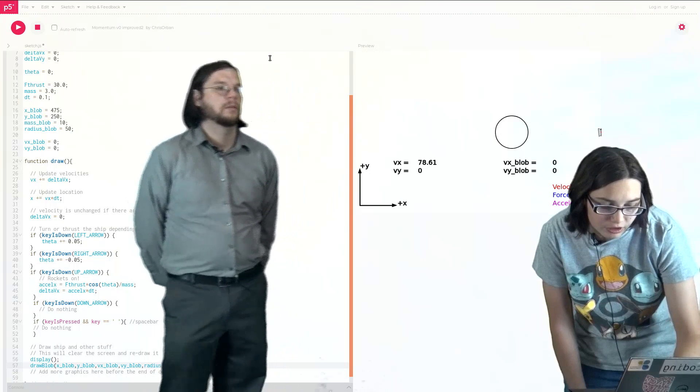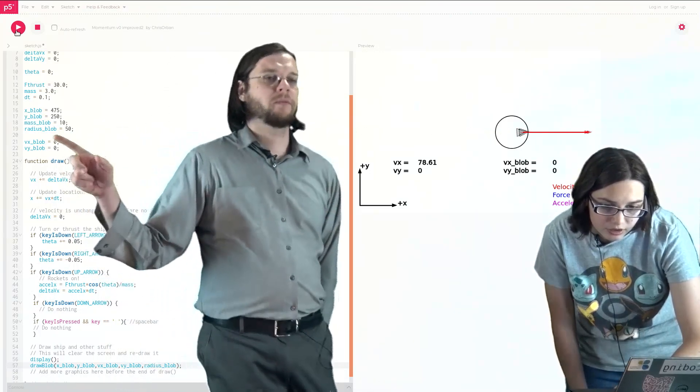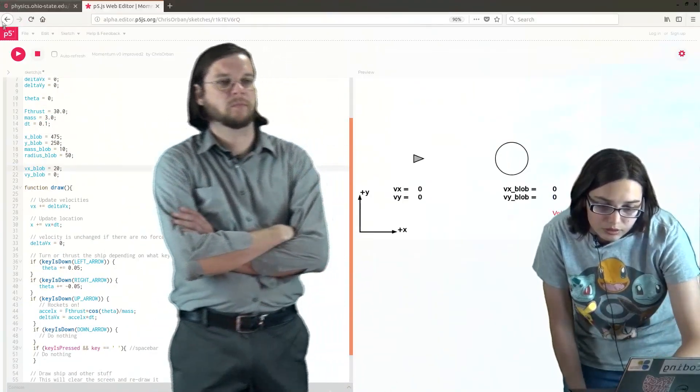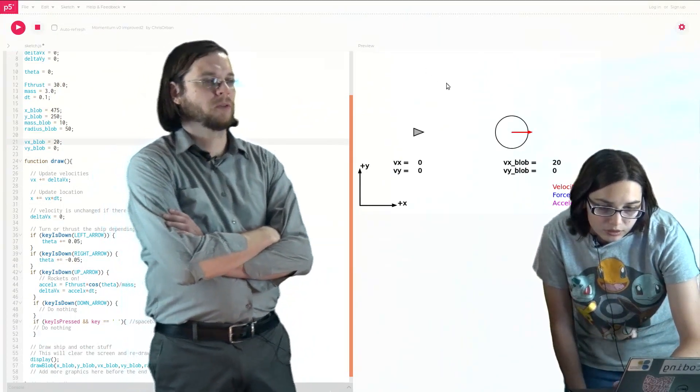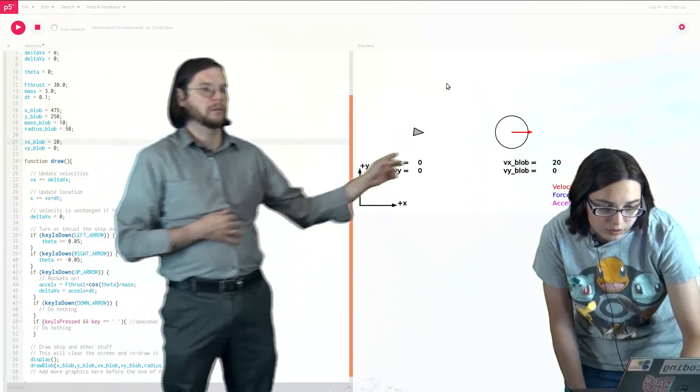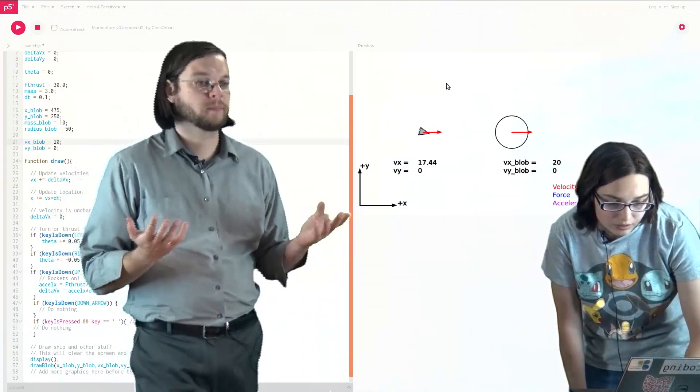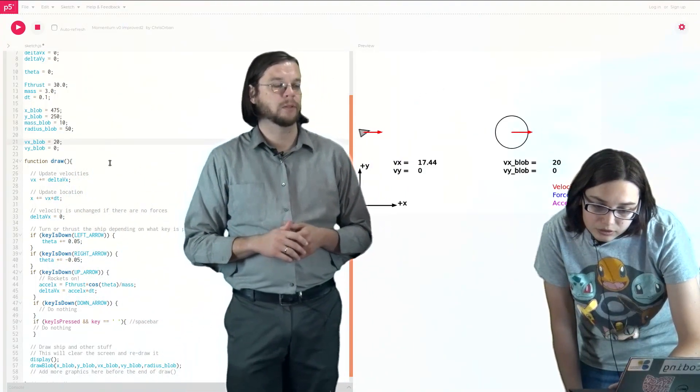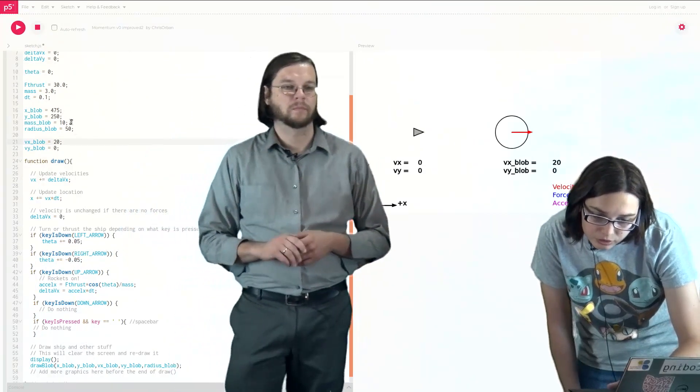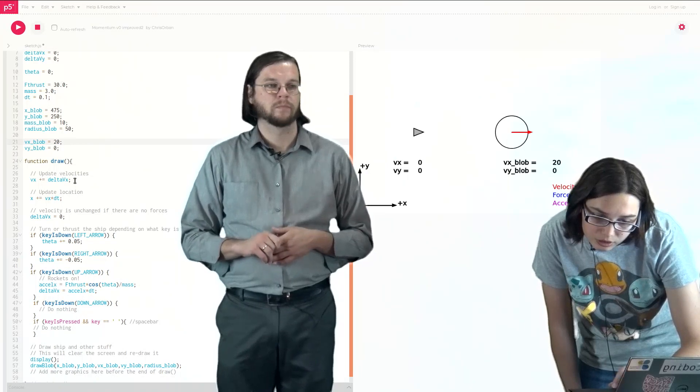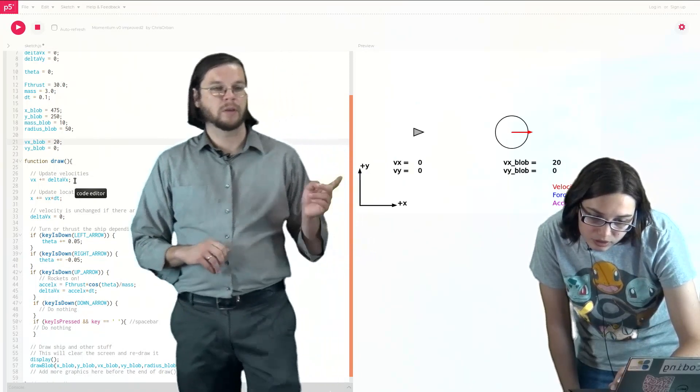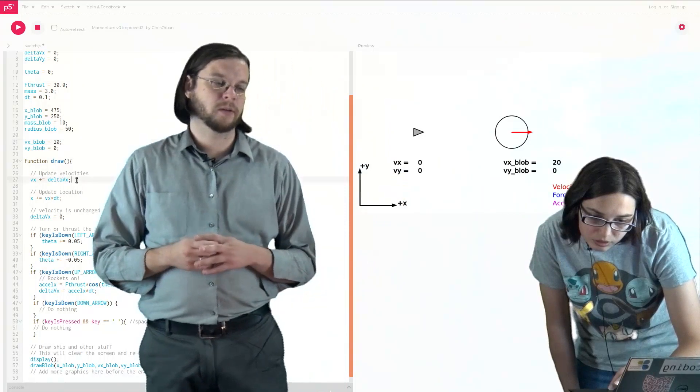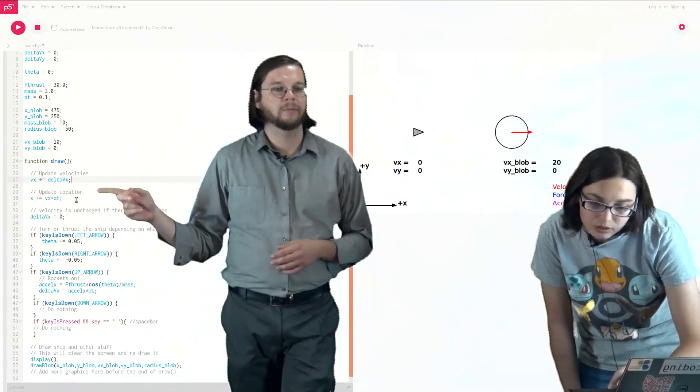So if you want to set VX blob equal to 20, just see what happens. Okay. So it's 20 now. So we see a velocity vector there, the red velocity vector for the blob, but it's not actually moving. And so we're missing something in the code to make it move. That's the first thing. So probably similar to what we did for the rocket, right? Mm-hmm. Yeah. So the thing about the blob is that it's only going to move at a constant velocity. We're not actually going to accelerate it necessarily like we accelerate the rocket. So we really don't need an update velocity section for the blob. We only need an update. Right. So we're not accelerating. Okay. That makes sense.